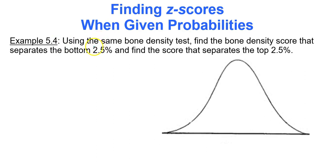Using the same bone density test as our previous video, find the bone density score that separates the bottom 2.5% and find the score that separates the top 2.5%. In my picture, my mean is 0 because I'm dealing with the standard normal distribution. I'm looking for the data value that separates the bottom 2.5%, so that means I have a region in the lower tail of the graph on the left side with the area of 0.025. And then I have another z-score that separates an upper region of 0.025. So those regions represent the probabilities of the data values that are the top 2.5% and the bottom 2.5%.